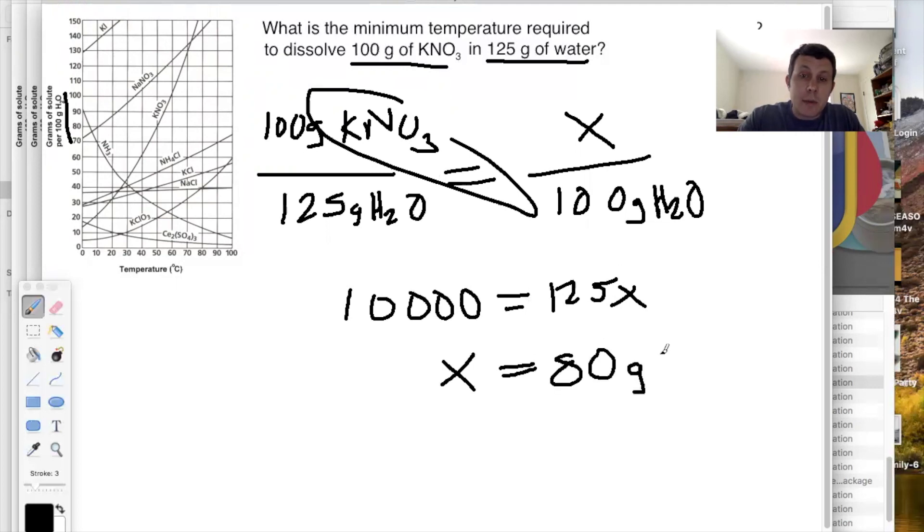So I need the ability to dissolve 80 grams of KNO3 in 100 grams of water. What's the minimum temperature that occurs? So if I find KNO3, I go up to where it's 80, and it looks like the lowest temperature needed to make that happen is 50 degrees Celsius. So anything at 50 or above will be able to handle this, will be able to dissolve this.